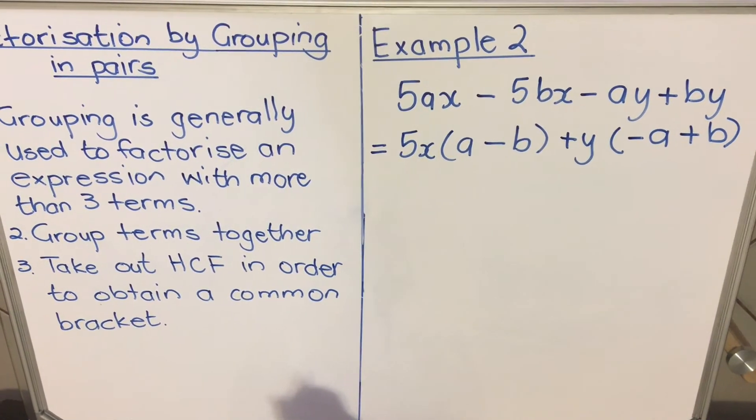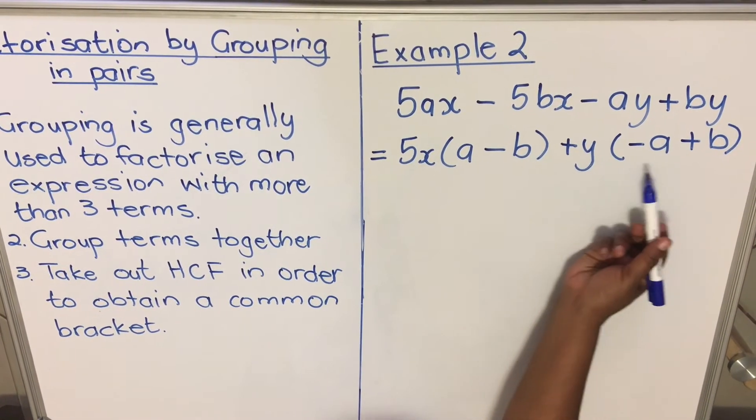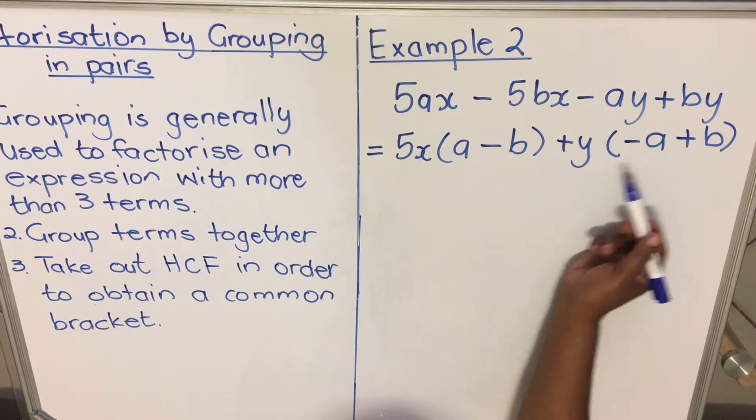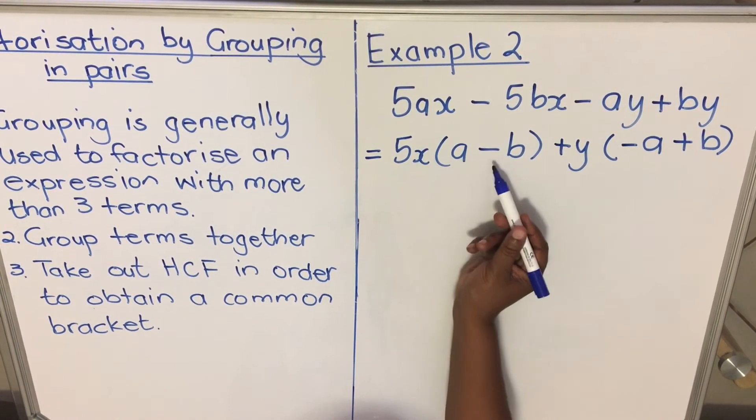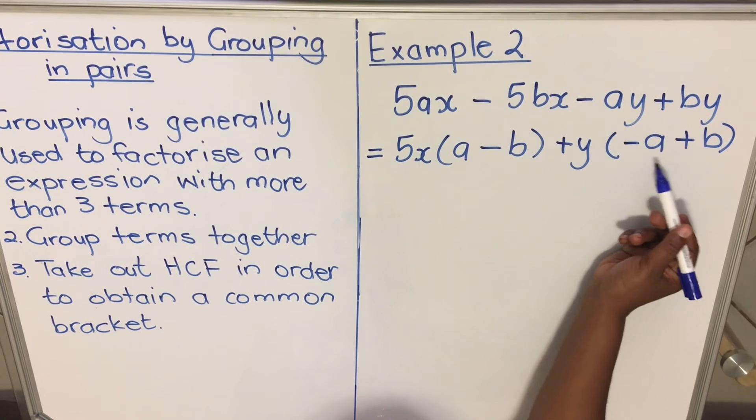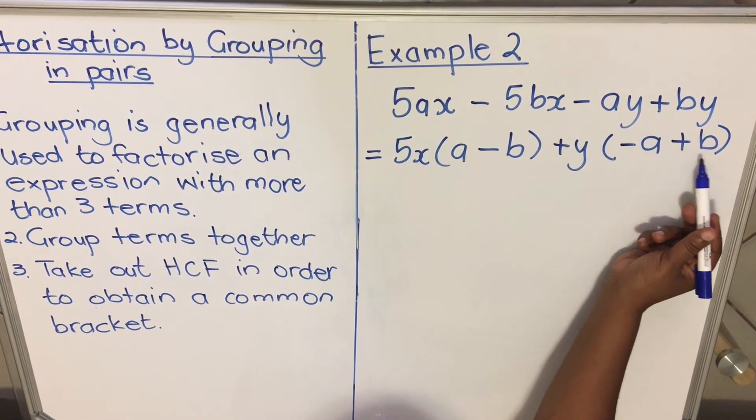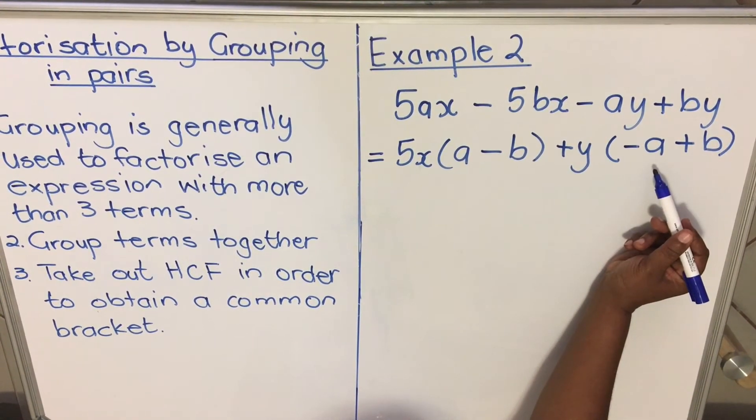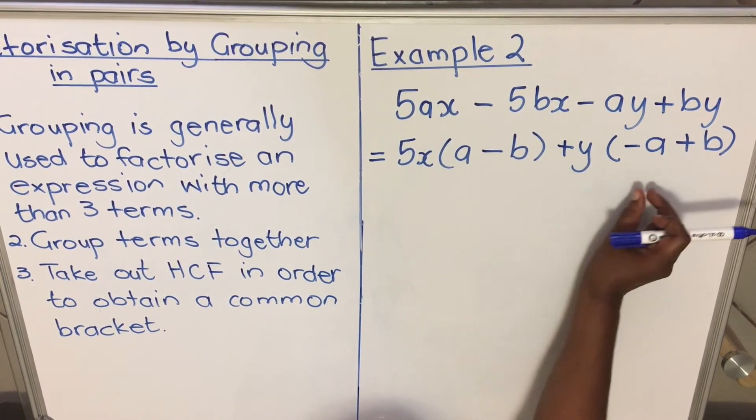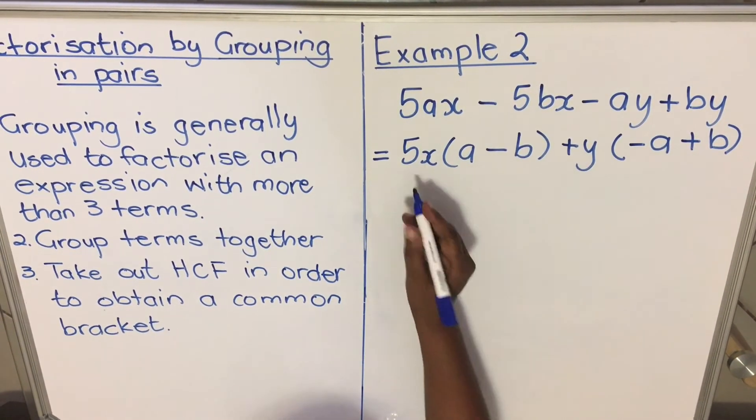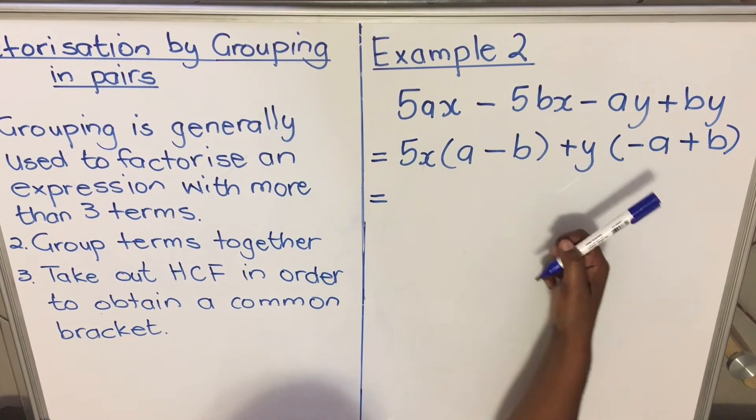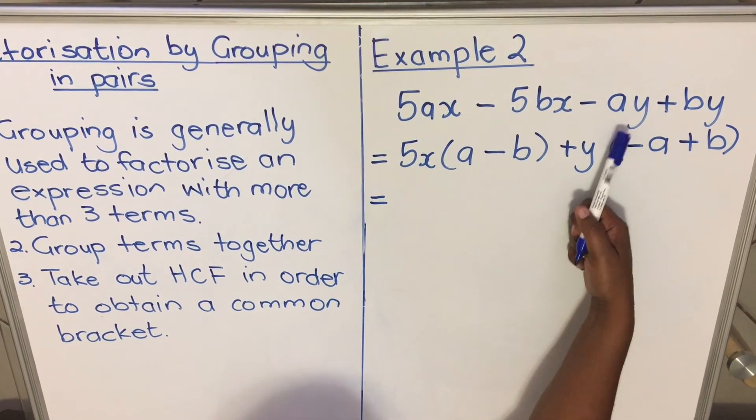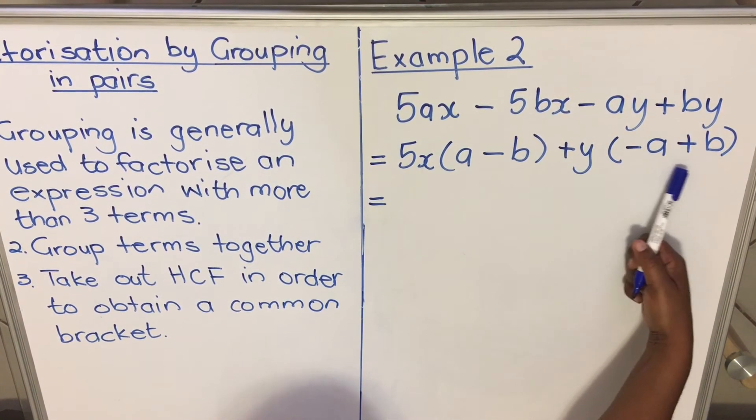I deliberately took minus y so that we have this bracket. If we don't get this bracket, you have (a - b), but in this one it's not (a - b) - it's (-a + b). The signs are not the same. The signs have to be exactly the same, so what you do is take out a negative y.